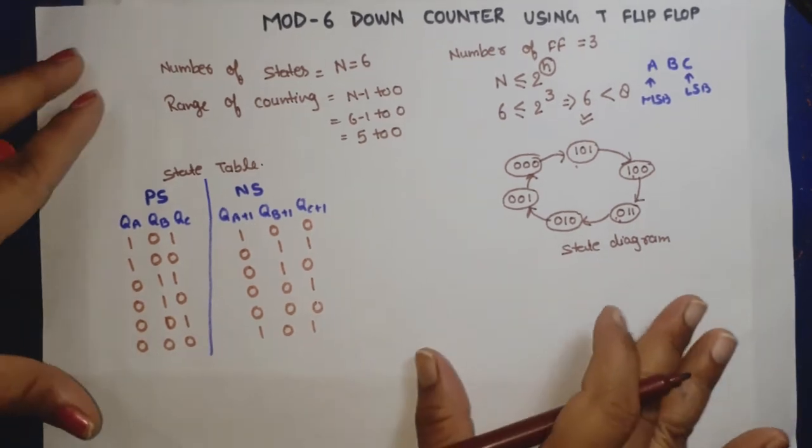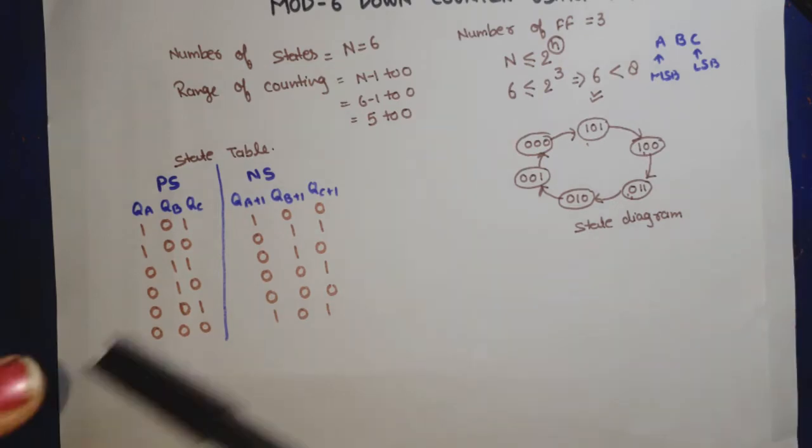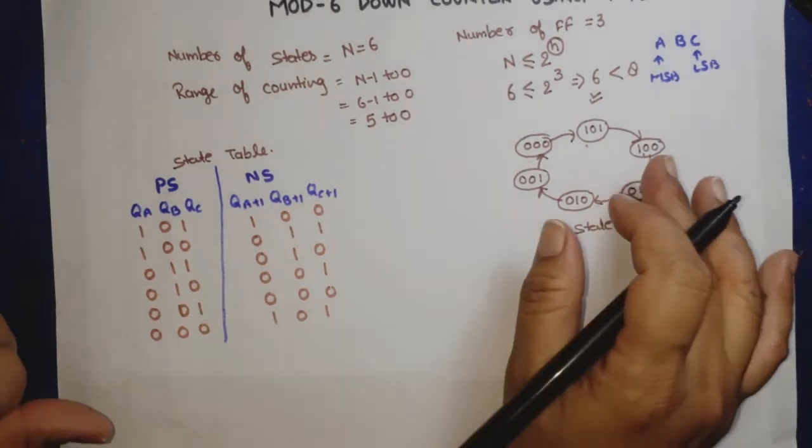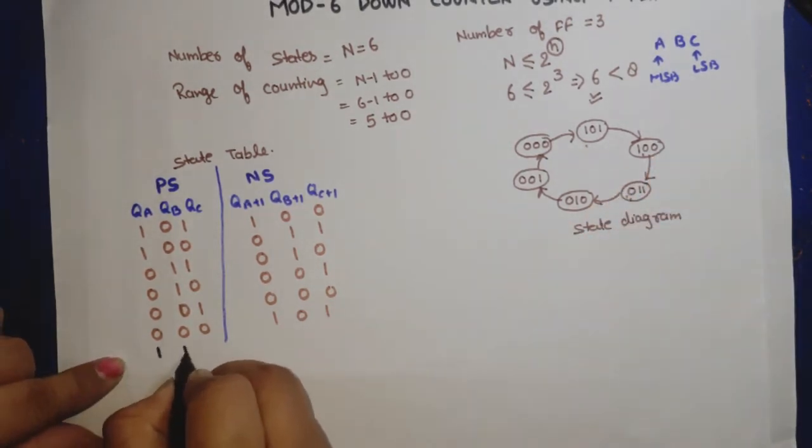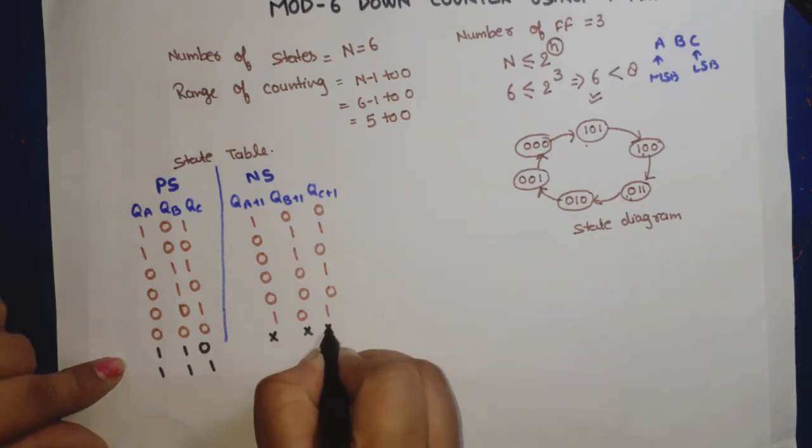What are our unused states? States 6 (110) and 7 (111) are unused, so we will take them as don't care.